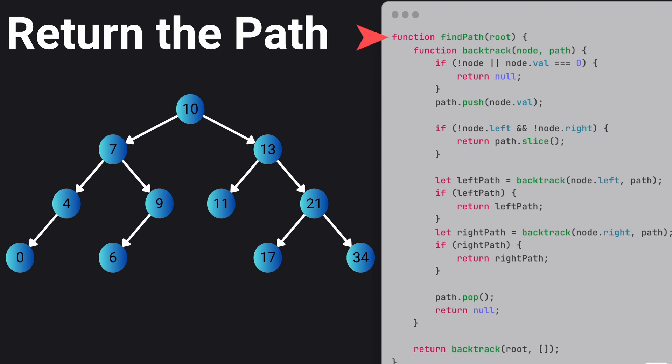So we will again start from the root node and we will define a helper function, backtrack. Our base case will be if the node is null or its value is 0, and if either of this is true we will return null. Otherwise we will add the current node's value to the path list. The other base case will be if there is no left and right children of the node, which means that it's a leaf node, and in this case we will return the path of the node.